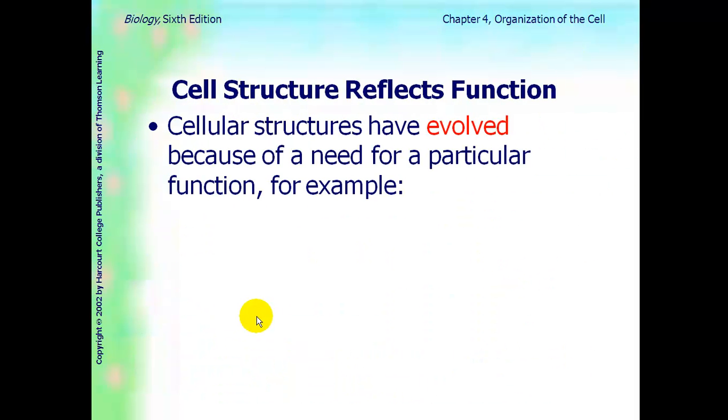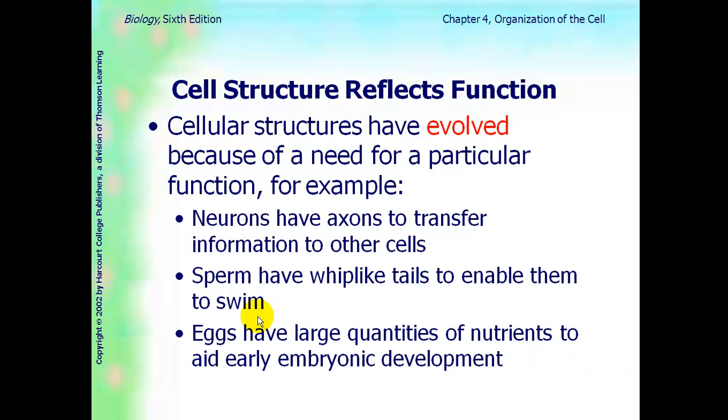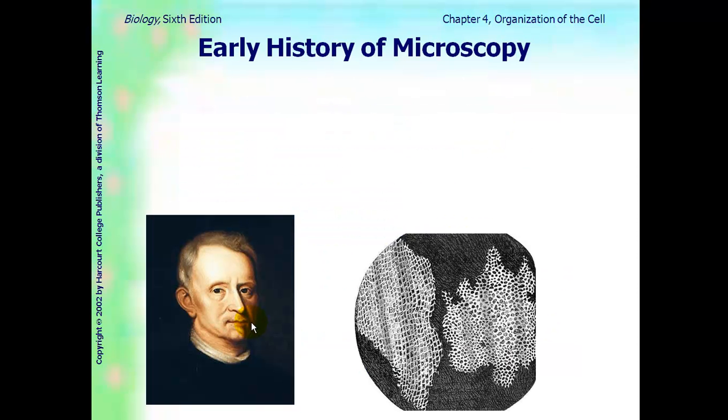Cellular structures have evolved over time because of a need for a particular function. So, looking at that property of evolve, here's some examples of how cells have changed. Neurons now have axons to transfer information to other cells. Sperm evolved to have whip-like tails that enable them to swim fast. Eggs have large quantities of nutrients, so they can aid in early embryo development.